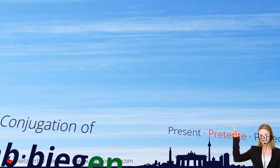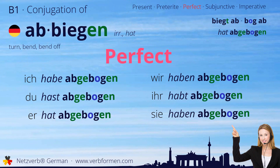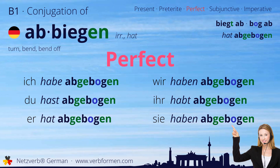Let's continue with the present perfect. Ich habe abgebogen. Du hast abgebogen. Er hat abgebogen. Wir haben abgebogen.